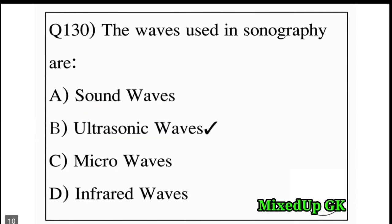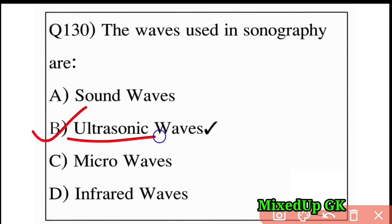Next question: the waves used in sonography are which type? Option A: sound waves, Option B: ultrasonic waves, Option C: microwaves, Option D: infrared waves. The answer is Option B: ultrasonic waves. Ultrasonic waves are used in sonography.